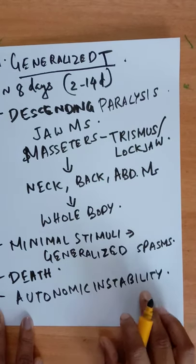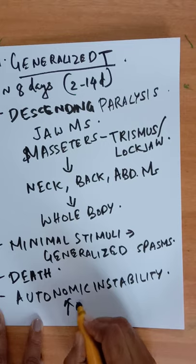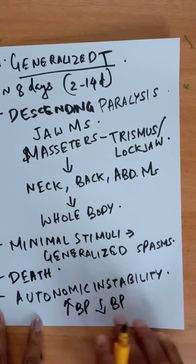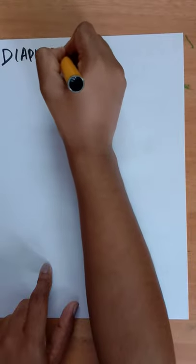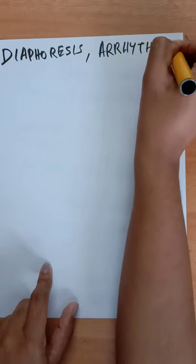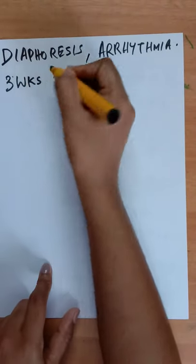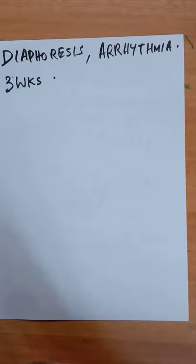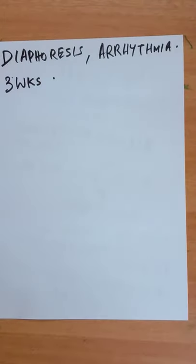Autonomic instability usually manifests with blood pressure fluctuations in the form of either hypertension or hypotension, and also can present with diaphoresis and arrhythmia. Recovery usually begins after three weeks. Recovery from tetanus occurs by sprouting new terminals in the spinal cord, leading to relaxation of the contracted muscles.